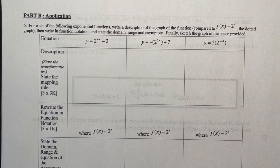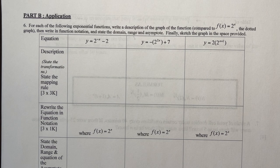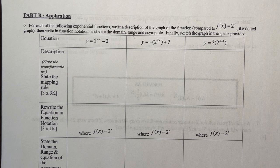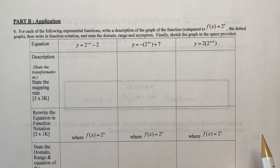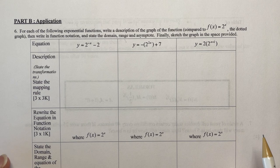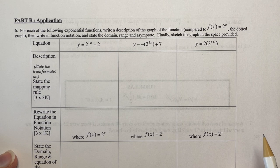This is part B of the Exponential Functions Test, Unit 4 in the Nelson Functions textbook. In this part of the test, you're asked to do some transformations of exponential functions and some word problems. It's worth a lot of marks — 27 marks for these graphs.